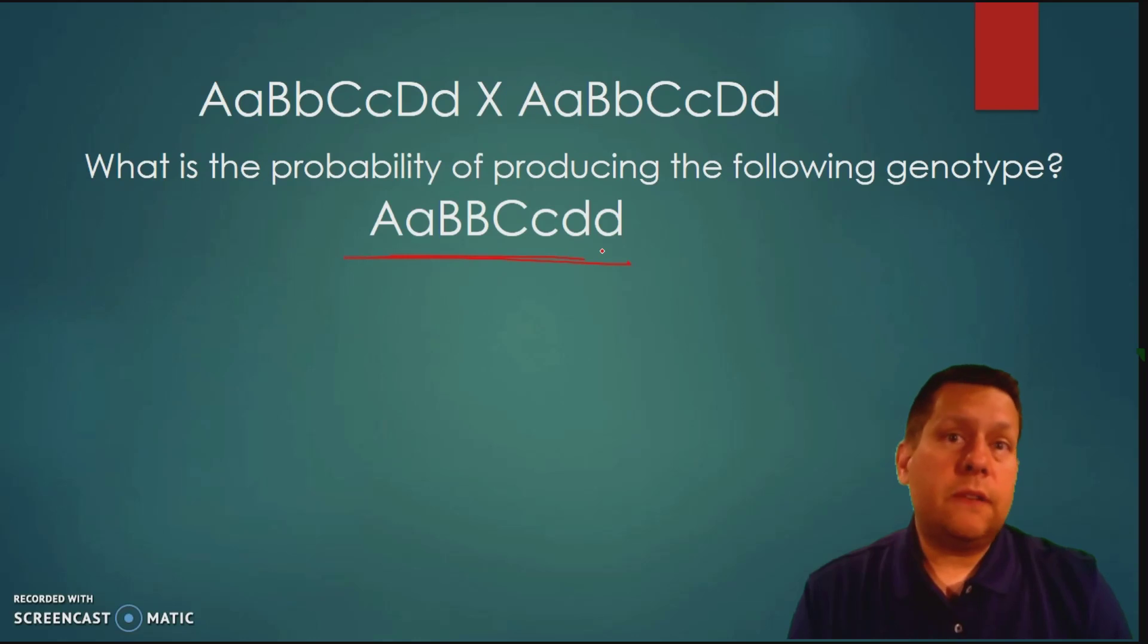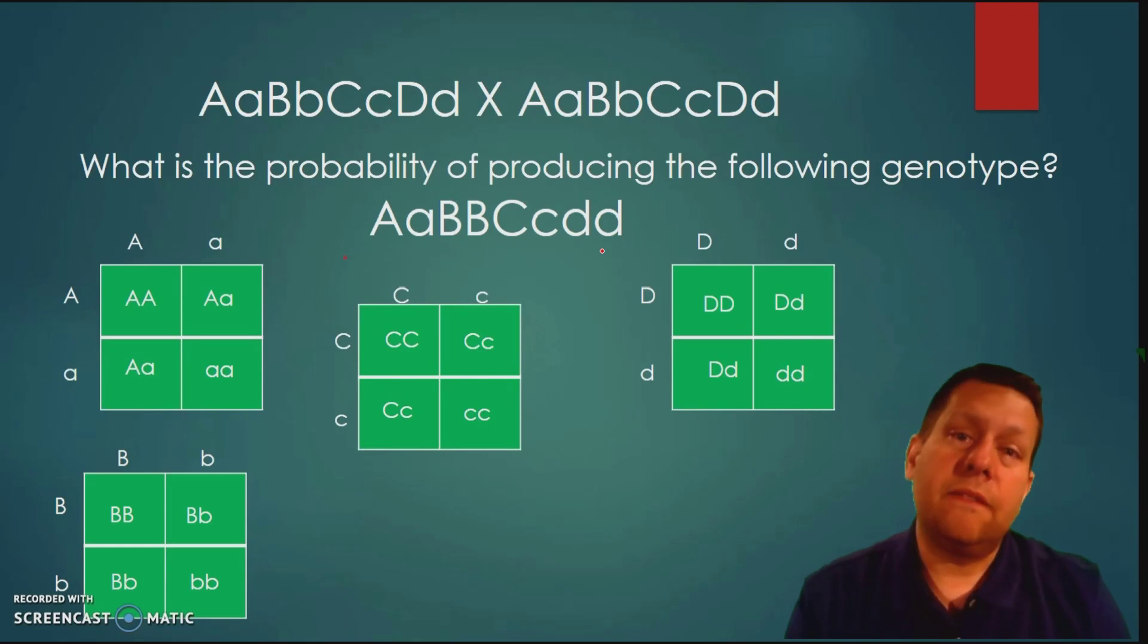Now students have tried to figure out the answer to this by completing a whole bunch of Punnett squares like this and then evaluating each Punnett square and that will definitely work but it's going to take a little bit more time than using the addition multiplication rule and when it comes to the AP biology exam you really don't want to be wasting time.